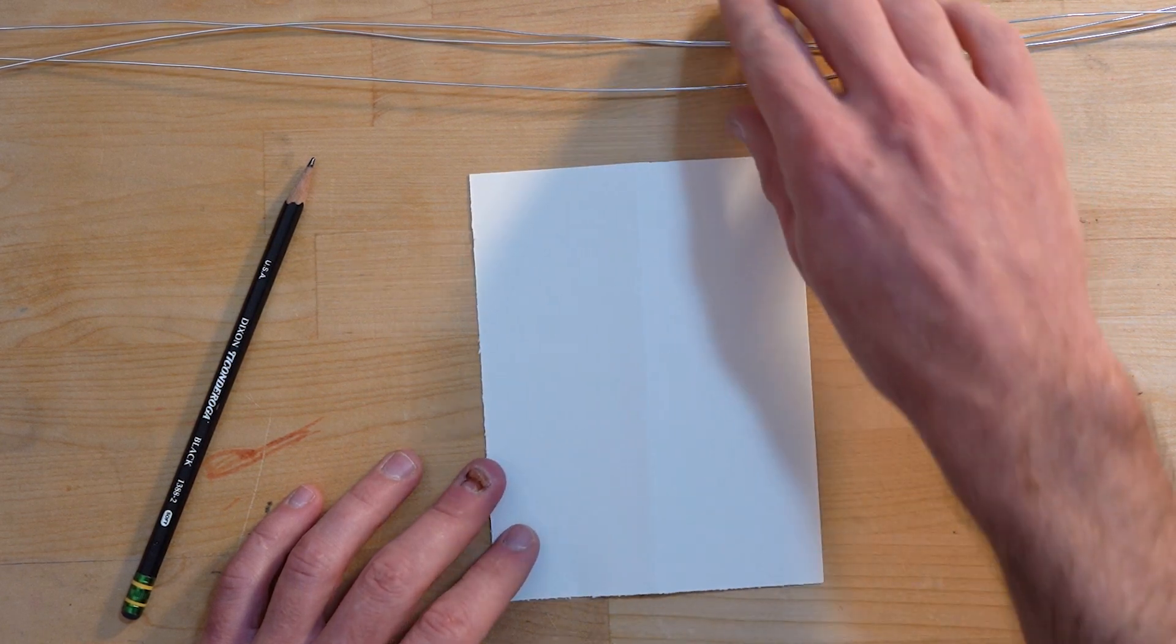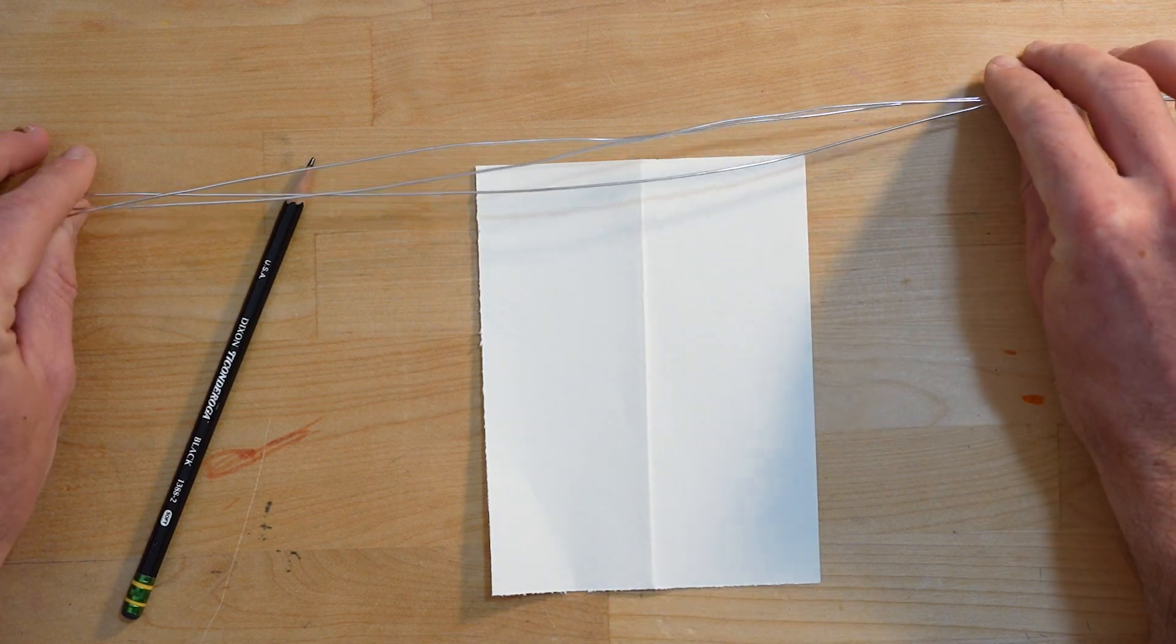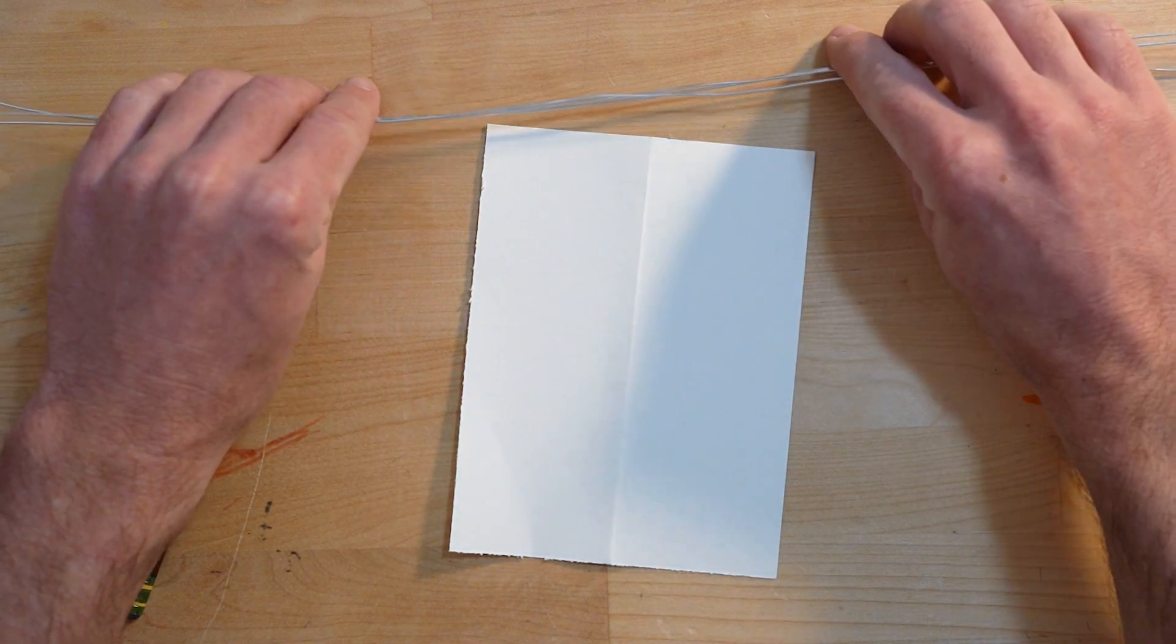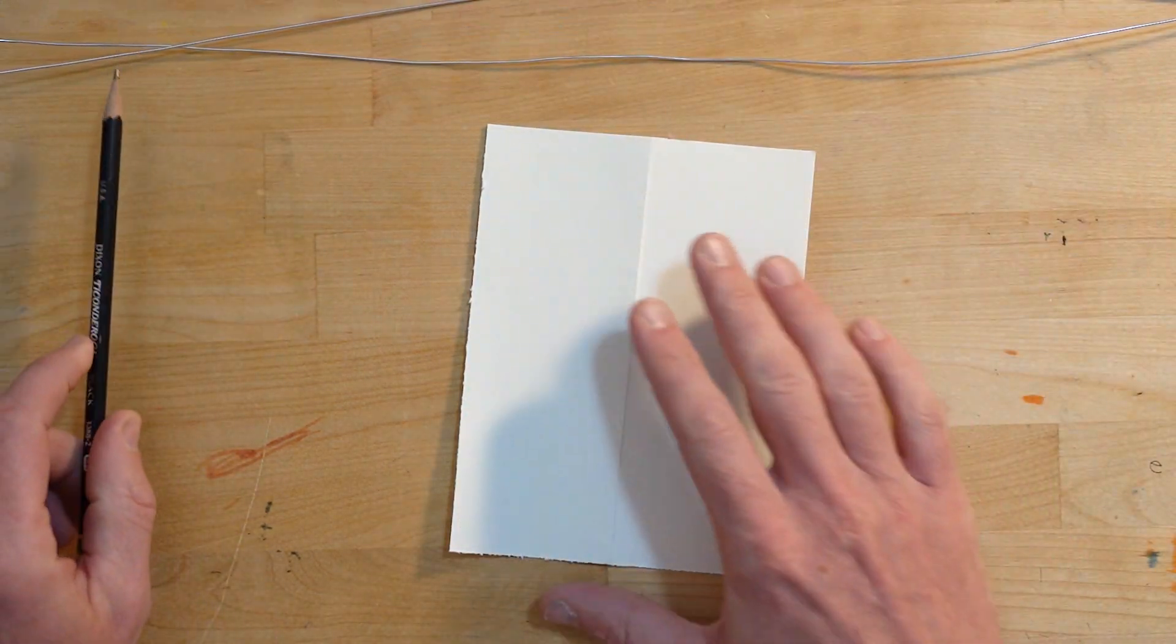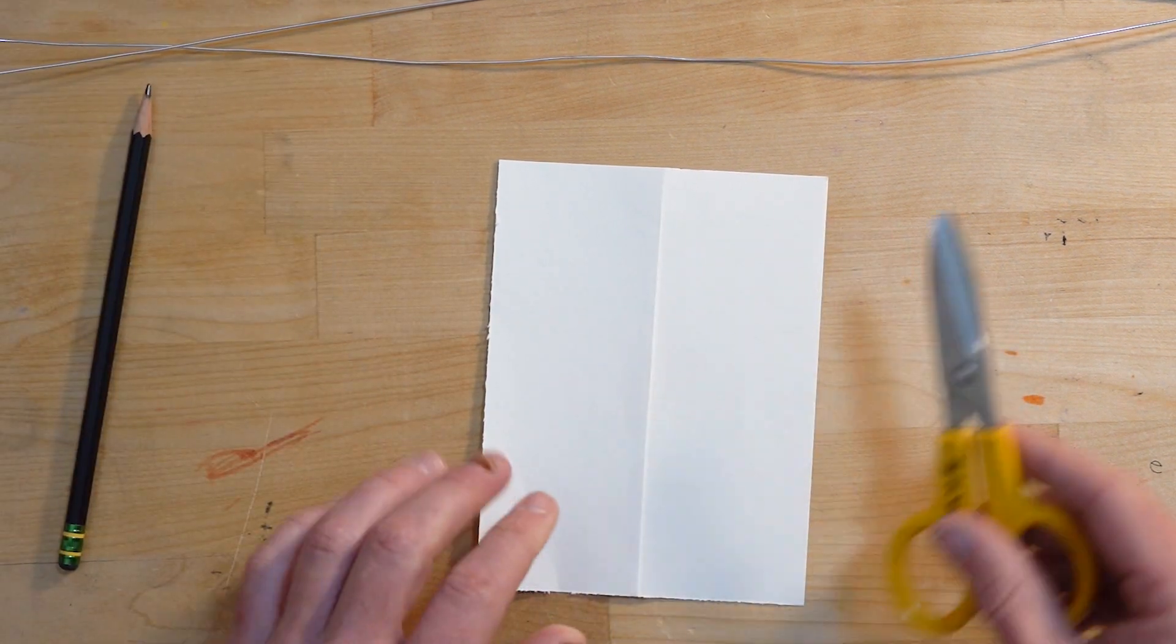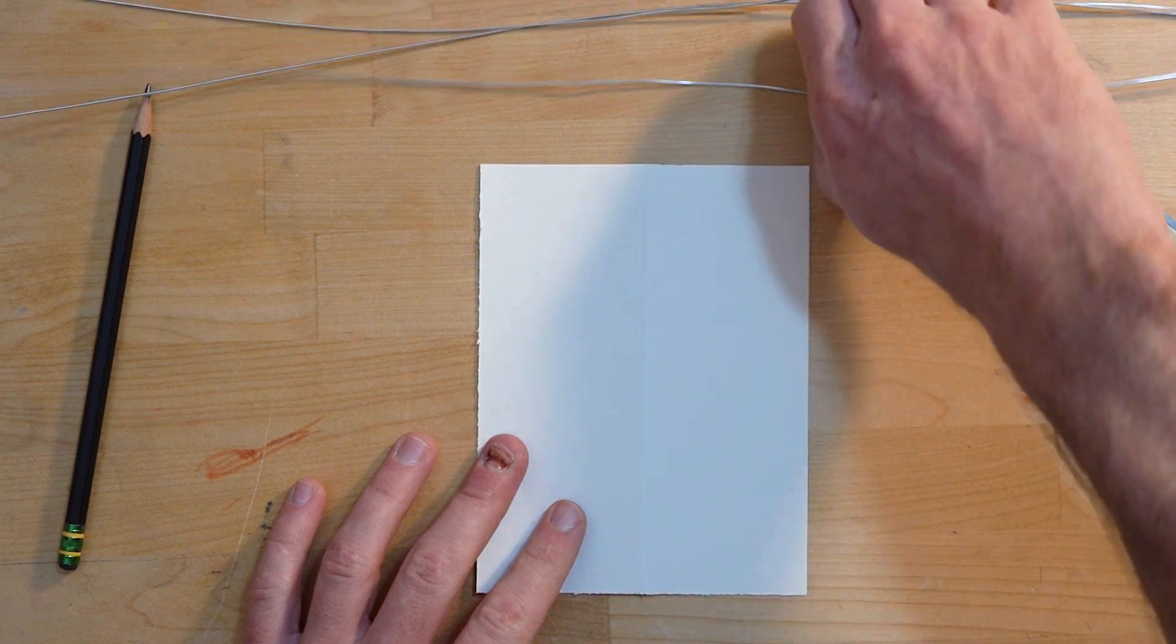Our supplies are pretty straightforward. We have some wire, pre-cut about two feet in length, and every student is going to get about two or three of these. Then we need a pencil, a little piece of cardstock, and some scissors to cut this wire. This is real soft aluminum wire.